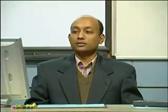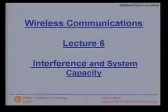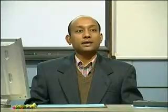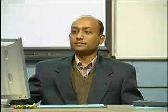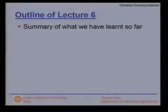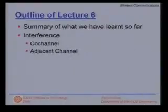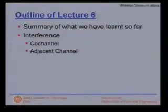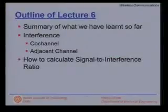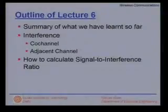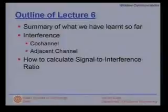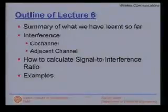In today's lecture, we will talk about interference and system capacity. We will see that interference presence is a prime concern and has to be taken into consideration while designing cellular communication systems. The outline is as follows: we will first summarize what we have already learnt, then talk about two important kinds of interference — co-channel interference and adjacent channel interference — then learn how to calculate the signal-to-interference ratio, and finally look at some examples.